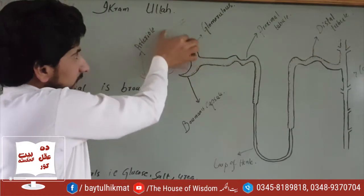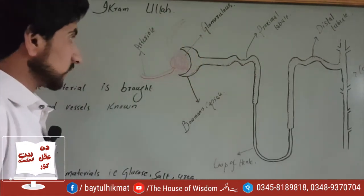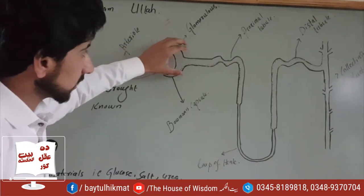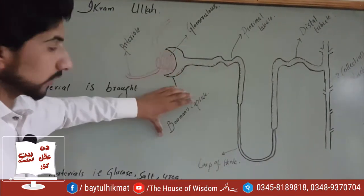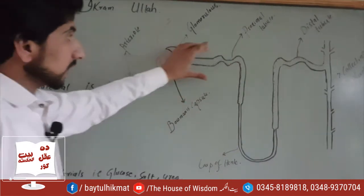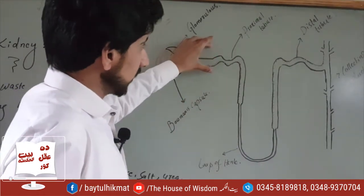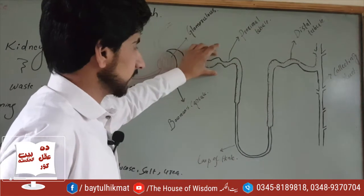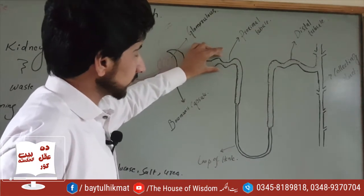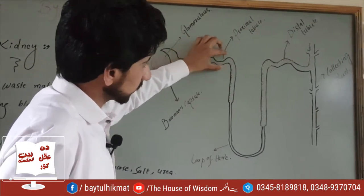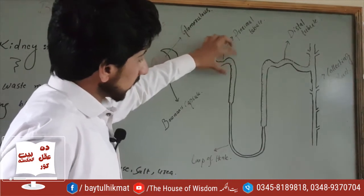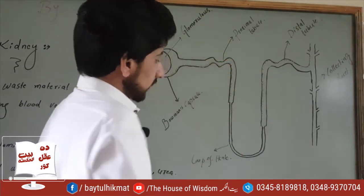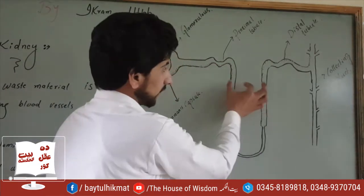This is the glomerulus. The structure here is the Bowman's capsule. This is the proximal convoluted tubule. This is the coiled tubule — the proximal convoluted tubule.